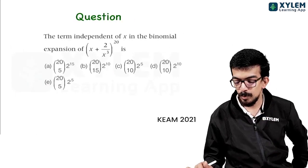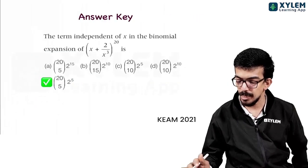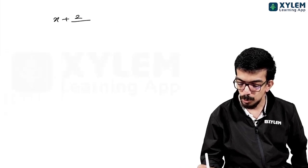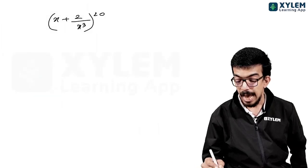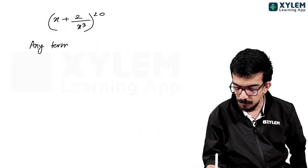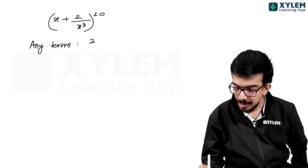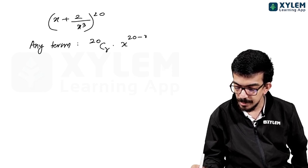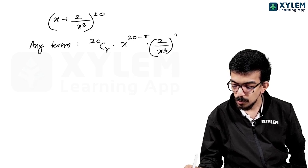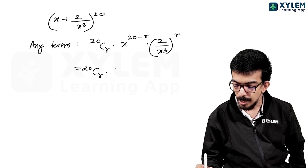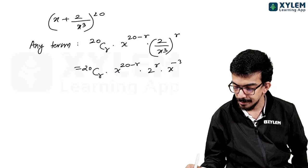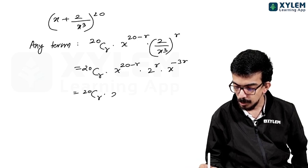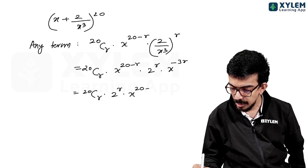The term independent of x in the binomial expansion of (x + 2/x³)^20. Any term will be of the form 20Cr into x raised to (20 - r) into (2/x³)^r. This simplifies to 20Cr into 2^r into x raised to (20 - r) into x raised to (-3r), giving 20Cr into 2^r into x raised to (20 - 4r).